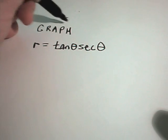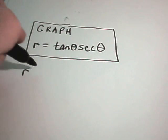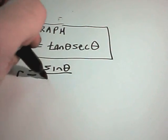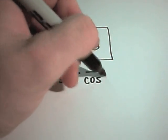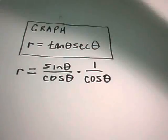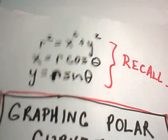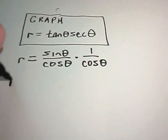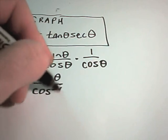Alright, so let's graph another one. r equals tangent of secant theta. Well, I'm going to rewrite tangent as sine theta over cosine theta. We know that secant of theta is 1 over cosine of theta. And the reason I'm doing that is to get it in terms of x and y coordinates. If I want to graph it that way, I need to have cosines of thetas and sines of thetas in there.